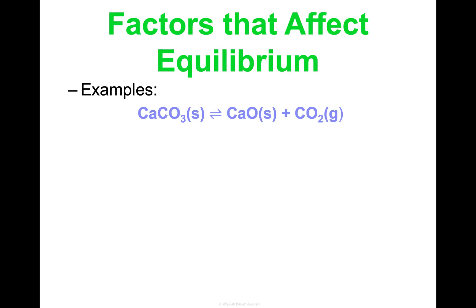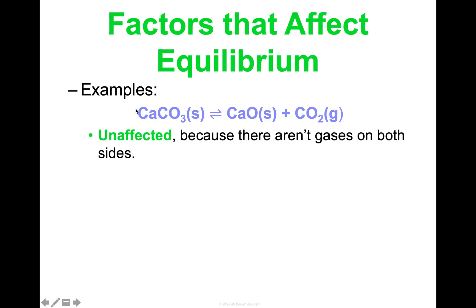Let's look at examples. Calcium carbonate in equilibrium: in the forward direction it decomposes into calcium oxide and carbon dioxide; in the reverse direction it's a synthesis reaction. This reaction is unaffected by a pressure change because there's only gas on one side — CO₂ — and not on the other. Since pressure changes only apply to gases, any change in pressure, increase or decrease, will not affect this reaction at equilibrium.